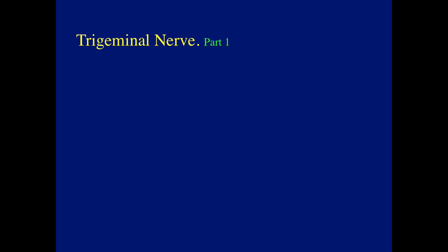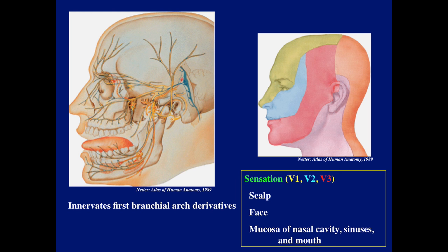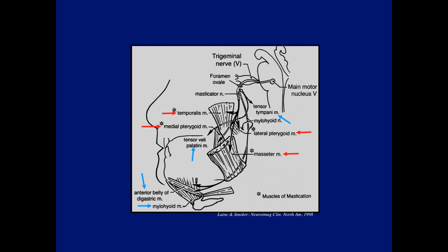Today I'm going to start with part one of the trigeminal nerve. The trigeminal nerve is perhaps the largest cranial nerve and covers a large territory. You can see the distribution on the skin — the forehead, the face, and the lower face. Basically the trigeminal nerves supply sensation to the scalp, face, and the mucosa of the nasal cavity, sinuses, and the mouth. All of these structures are derived from the first branchial arch.